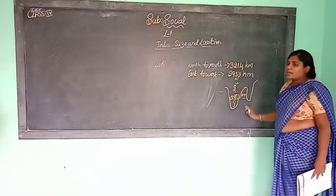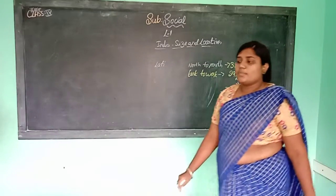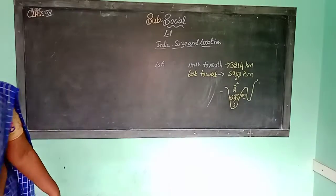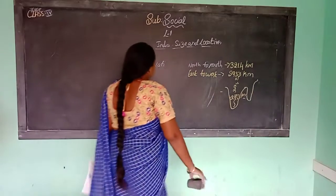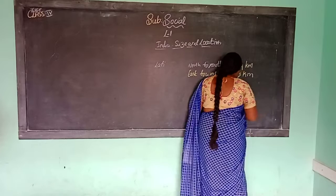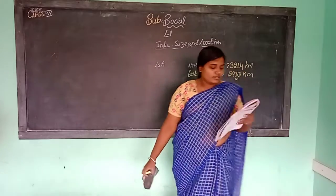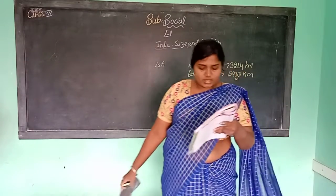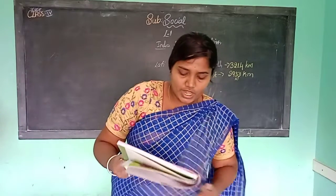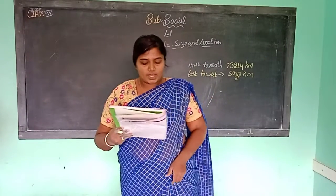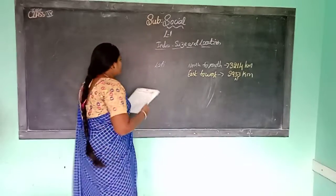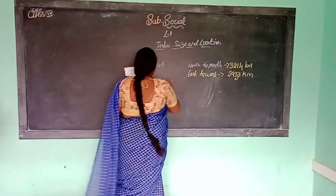Which are the neighboring countries of India? The neighboring countries of India are Pakistan, Nepal, China, Bhutan, Myanmar, Bangladesh, and Sri Lanka.